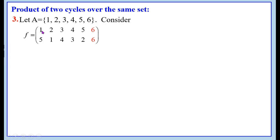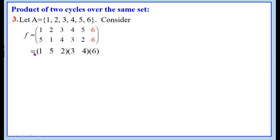What are the cycles? 1 goes to 5, 5 goes to 2, 2 goes to 1. Therefore the cycle is (1, 5, 2). The another cycle is: 3 goes to 4, 4 goes to 3. Therefore the cycle (3, 4). Then the identity permutation 6.